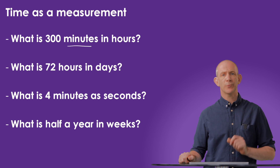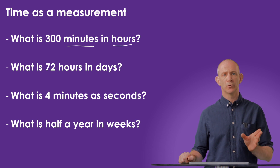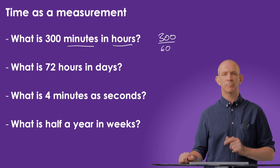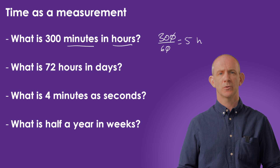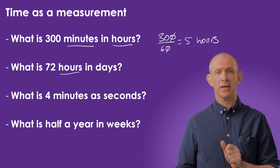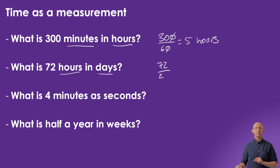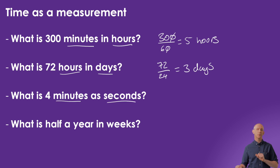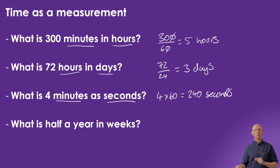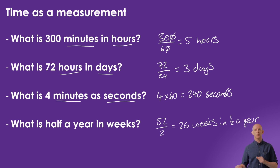To convert 300 minutes into hours, we're going from a smaller unit to a larger one, so we divide: 300 ÷ 60 = 5 hours. To convert 72 hours to days, we divide: 72 ÷ 24 = 3 days. To convert 4 minutes to seconds, we're going from larger to smaller, so we multiply: 4 × 60 = 240 seconds. For half a year in weeks, there are 52 weeks in a year, so 52 ÷ 2 = 26 weeks.